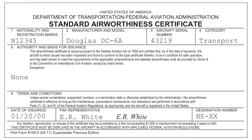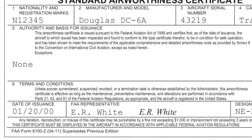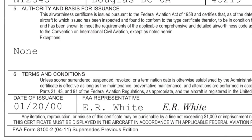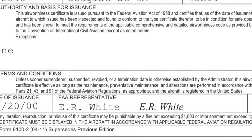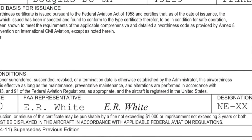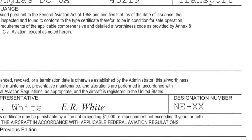The FAA notes that a standard airworthiness certificate remains valid as long as the aircraft meets its approved type design, is in a condition for safe operation, is registered within the U.S., and maintenance, preventative maintenance, and alterations are performed in accordance with 14 CFR Parts 21, 43, and 91.